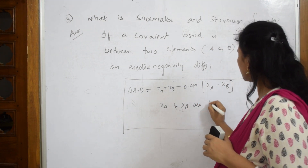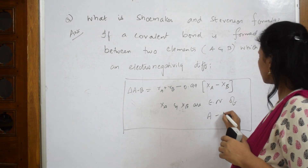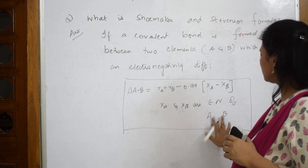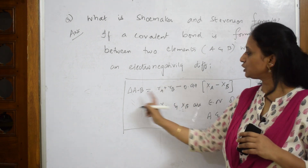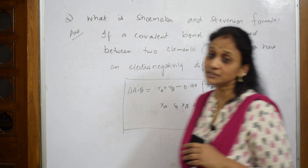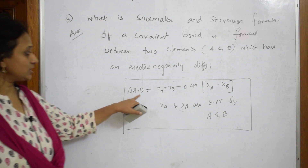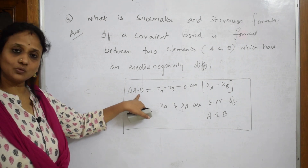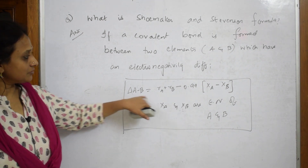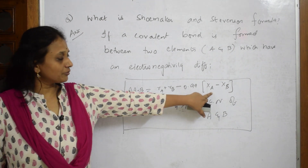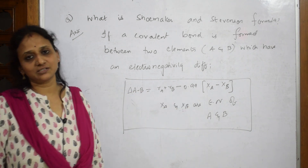You substitute the values into this formula and you will get the Shoemaker and Stevenson result — the covalent bond length for that particular pair of elements with a difference in electronegativity. That's it, you get the answer directly.